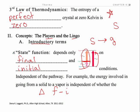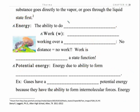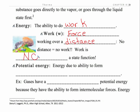In chemistry, delta is final minus initial in all situations but one, and we are finally going to see that one situation where we talk about initial minus final. Energy is the ability to do work, and work is defined as a force working over a distance — no distance, no work. Work is not a state function; work depends on the pathway.